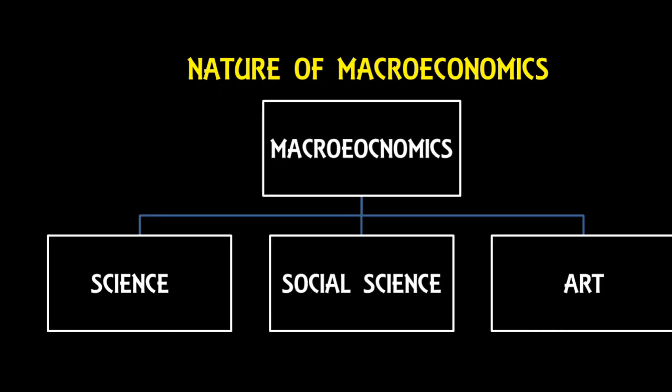When we discuss the nature of macroeconomics, it also means whether the study of macroeconomics is a scientific study, or whether it belongs to social science, arts, or all three. To answer this question we first need to understand what science is. Science is the systematic study of any subject which studies causal — that is, cause and effect — relationships between variables or facts.